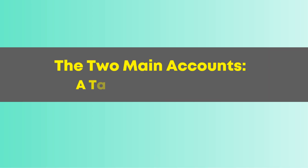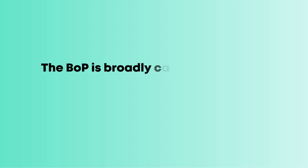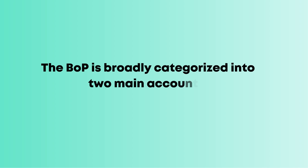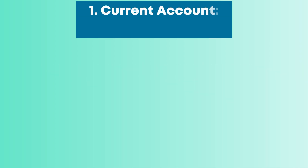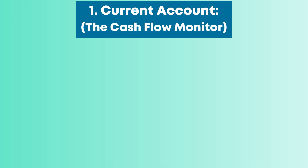The balance of payments is broadly categorized into two main accounts — a tale of two ledgers. Number one: the current account, the cash flow monitor.